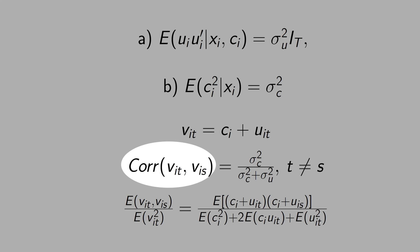And this is what you see in a PhD textbook, that the correlation between ViT and ViS is given by this formula, given T different than S. We use this S just to indicate that we want to calculate the correlation between different pairs of error terms. And what is correlation? It is the covariance between ViT and ViS, divided by the standard deviation of ViT and the standard deviation of ViS. What you see here is the variance of ViT.